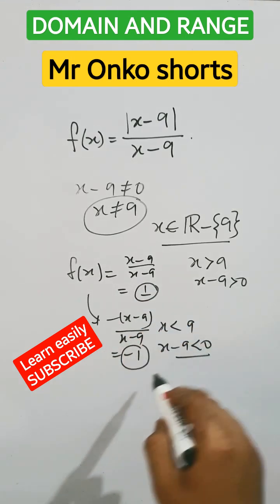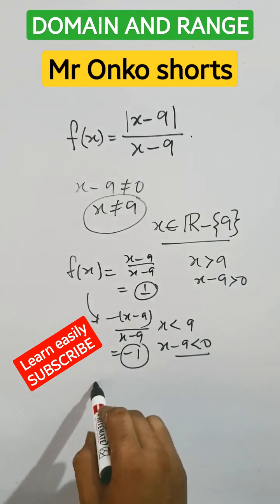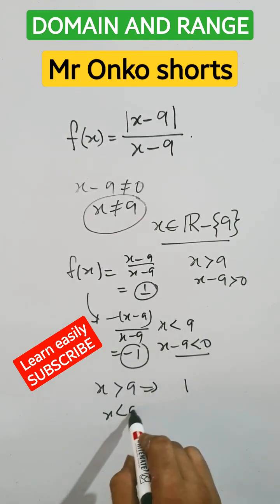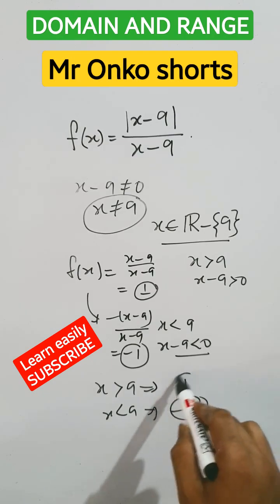So 1 and minus 1 are the range. When x is greater than 9, the range is 1. When x is less than 9, the range is minus 1. This is the answer.